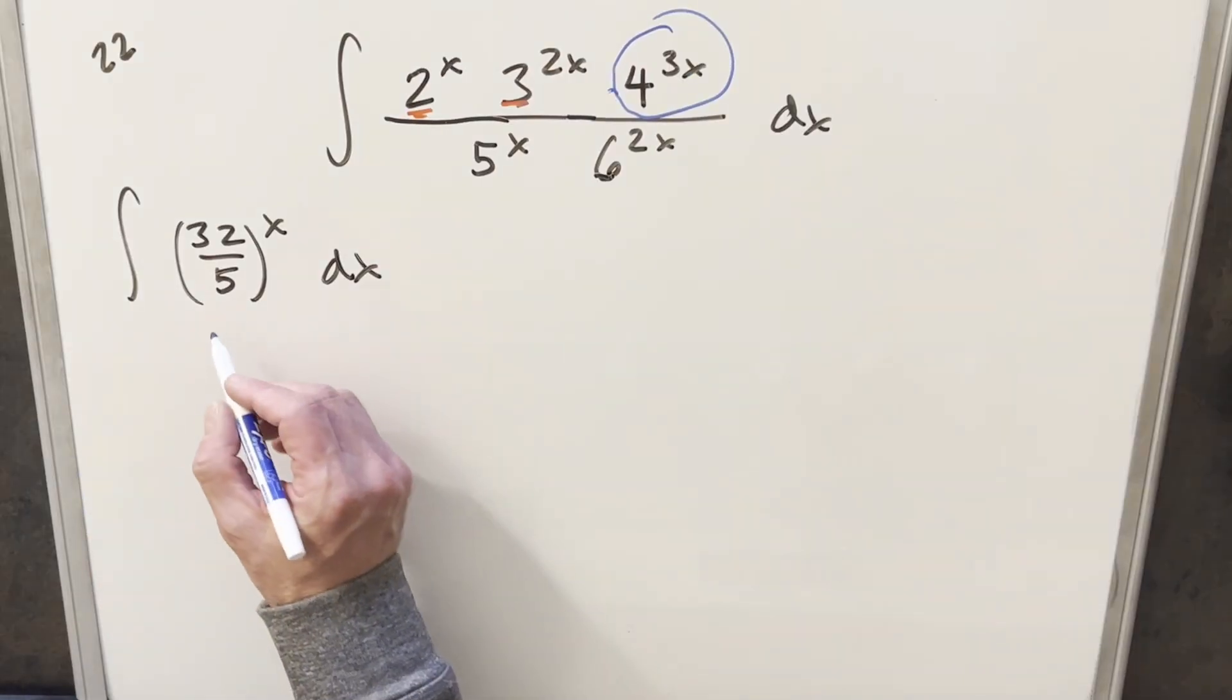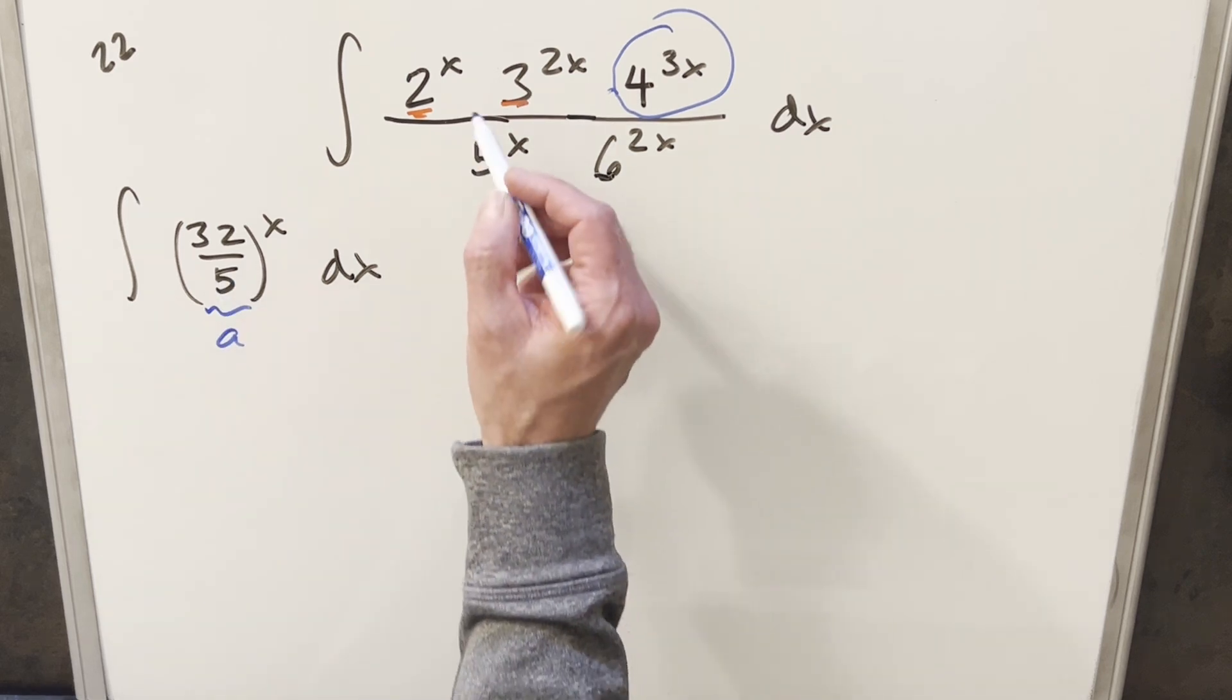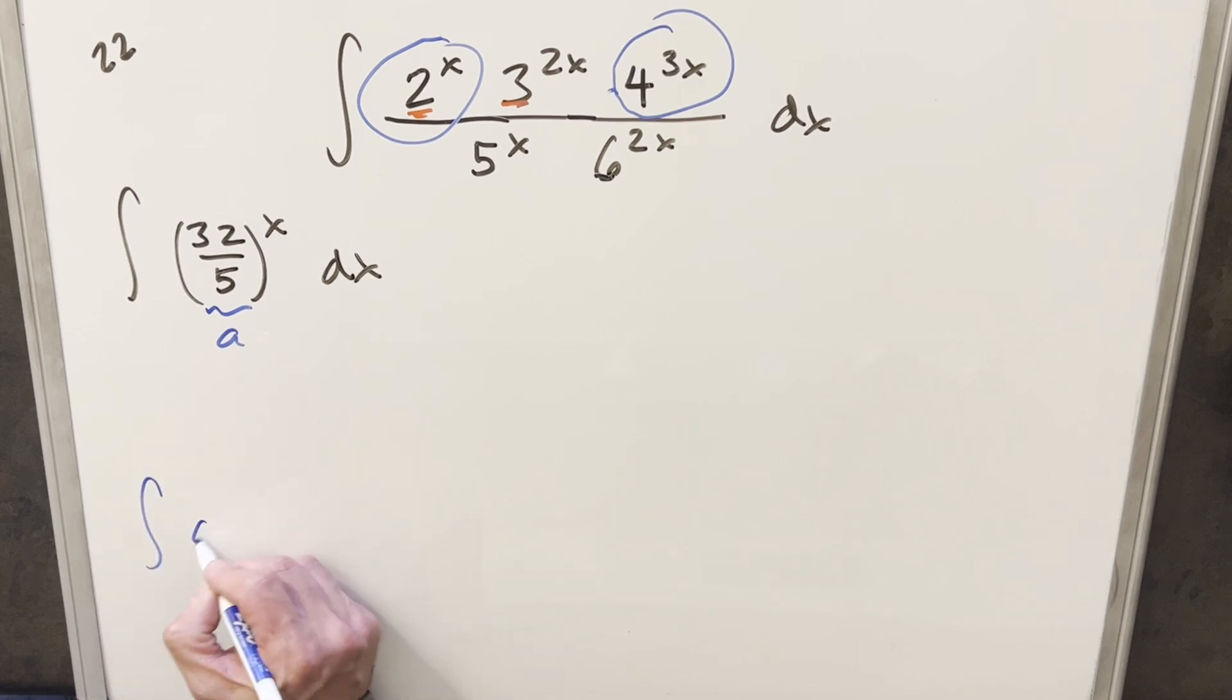Okay, so now at this point, you'll notice we've got our integral in this form of something a to the x. And this is actually not any different, really, than having integrating like 2 to the x. We actually have a formula for this. But let's just go ahead and derive this formula really quick for an integral to type a to the x dx.